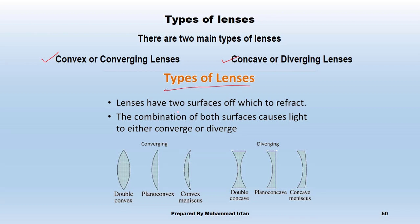Every lens has two surfaces which refract rays of light. The combination of both surfaces causes light to either converge — that is, focus at a single point — or diverge — that is, spread away from the center.